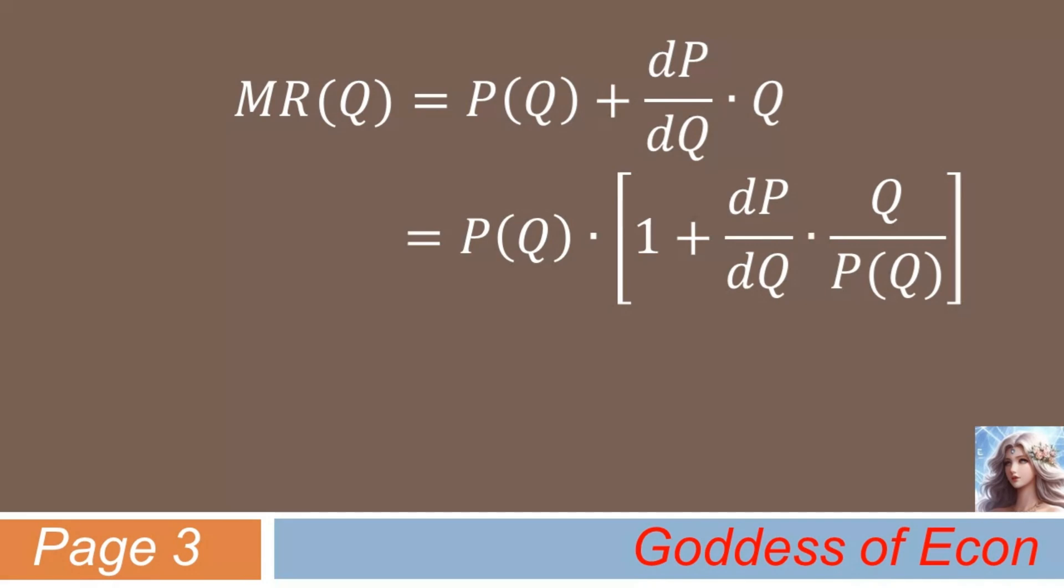Now, if you look carefully at the second term inside the bracket, you'll see that it sort of looks like the price elasticity of demand. The mathematical definition of PED that I've shown was dQ dP times P over Q. But here, we have dP dQ times Q over P. So, it seems like what we have is the inverse of the definition of price elasticity.